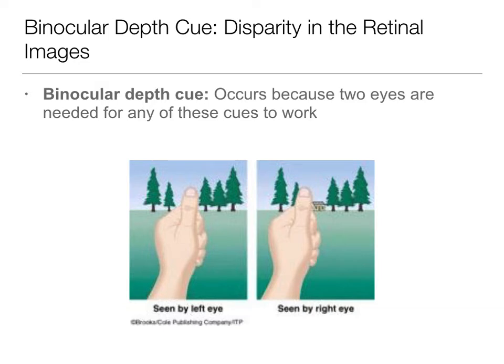So binocular depth cues occur between the two eyes, or you need both eyes for any of these cues to work. We've all done this — you put your thumb up, you close one eye, you close the other eye, you can hide it with one but not the other, or your thumb looks like it's moving. Do it right now: put your thumb in front of the screen, do the two different eyes, your thumb looks like it's moving even though it's standing still. This is because the information we're getting from both eyes is needed for most of our cues to work.